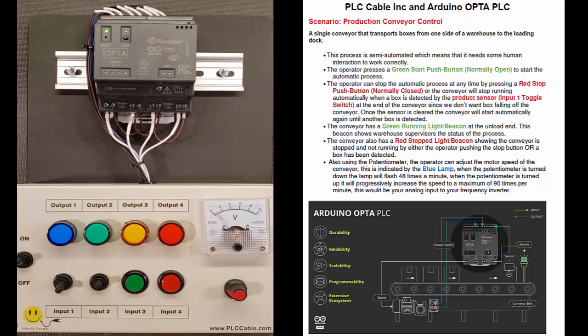The program that we have wrote in it is a production conveyor controller. So it's a single conveyor that just has a start stop on it, a proximity switch or some sort of photo cell that's going to detect a box at the end of the conveyor that will stop the conveyor. So it stops before it actually runs off the end of the conveyor.